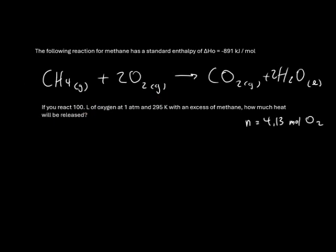Now that we know the moles of oxygen, we can find how much heat is going to be released. To find the heat change if we're given the standard enthalpy, we can say Q is equal to our moles divided by our coefficient times our standard enthalpy, that's the delta H naught.